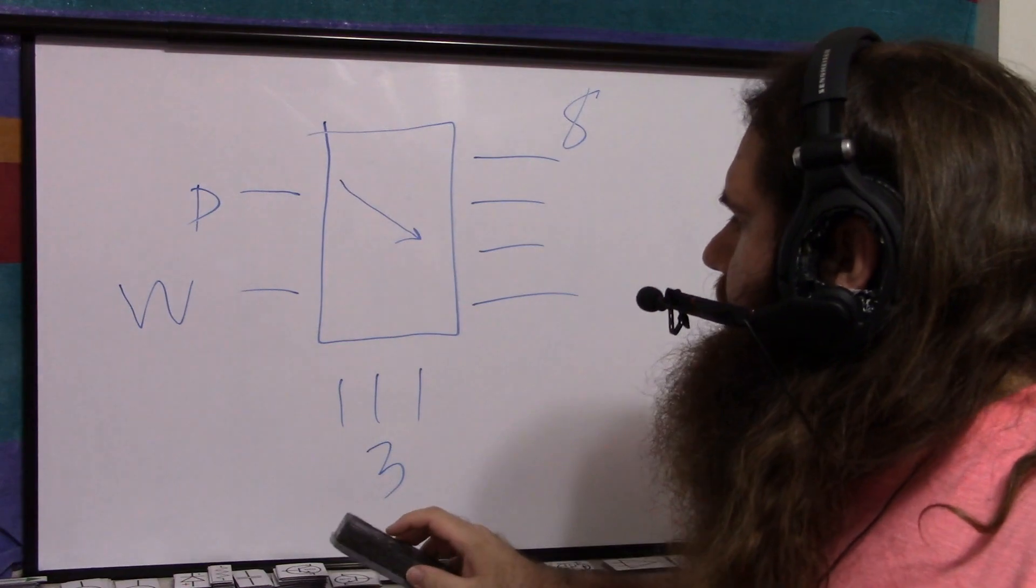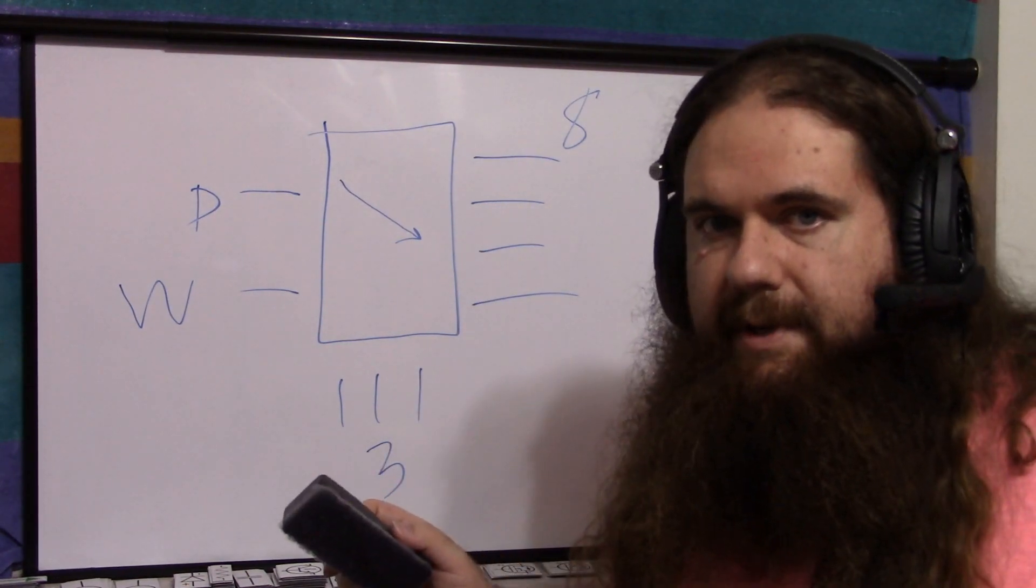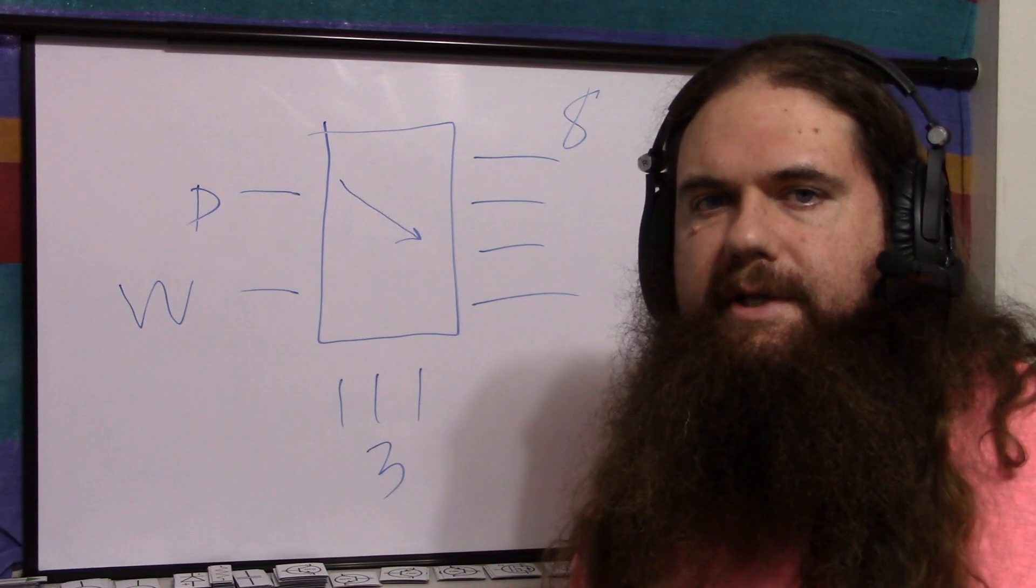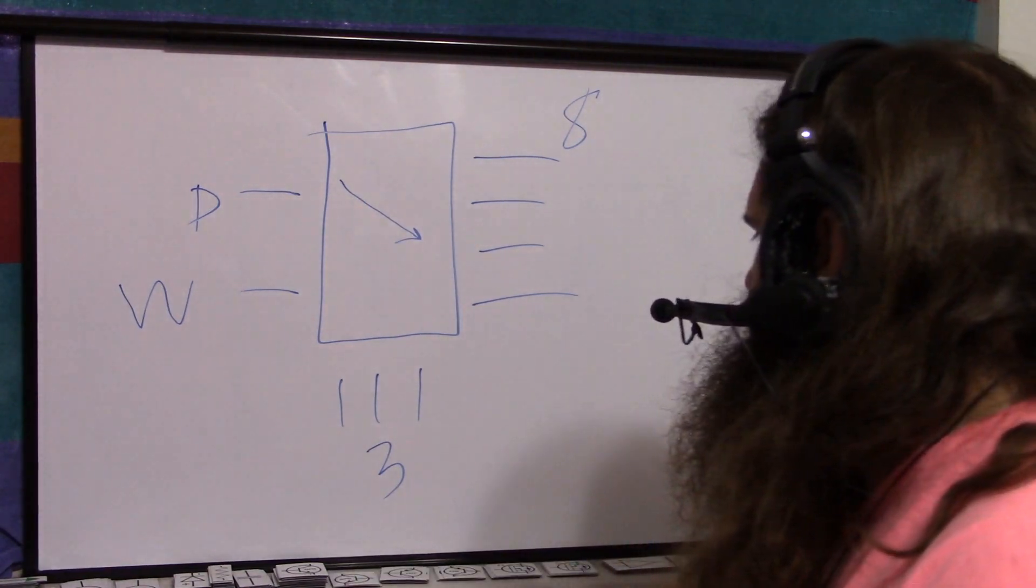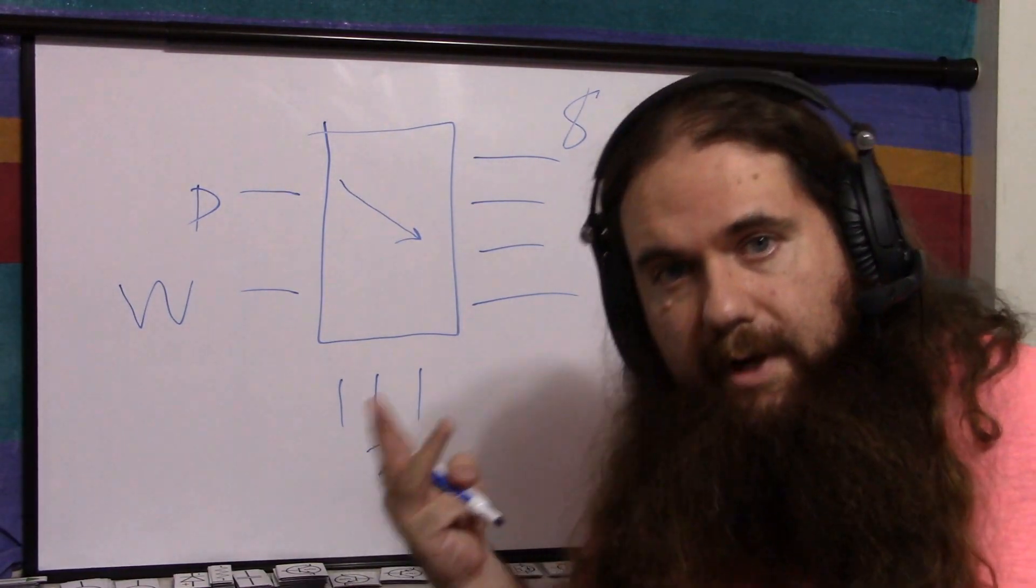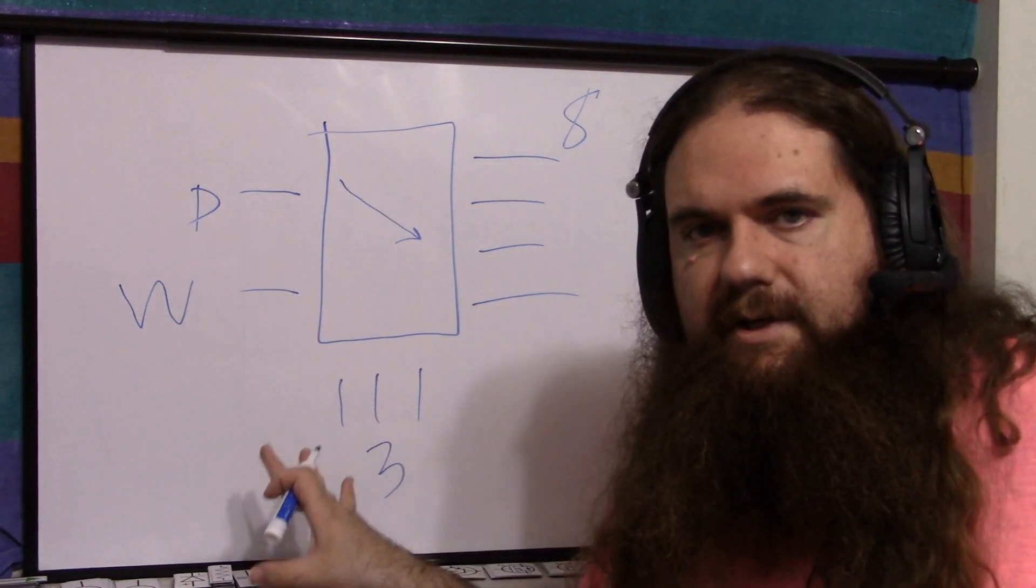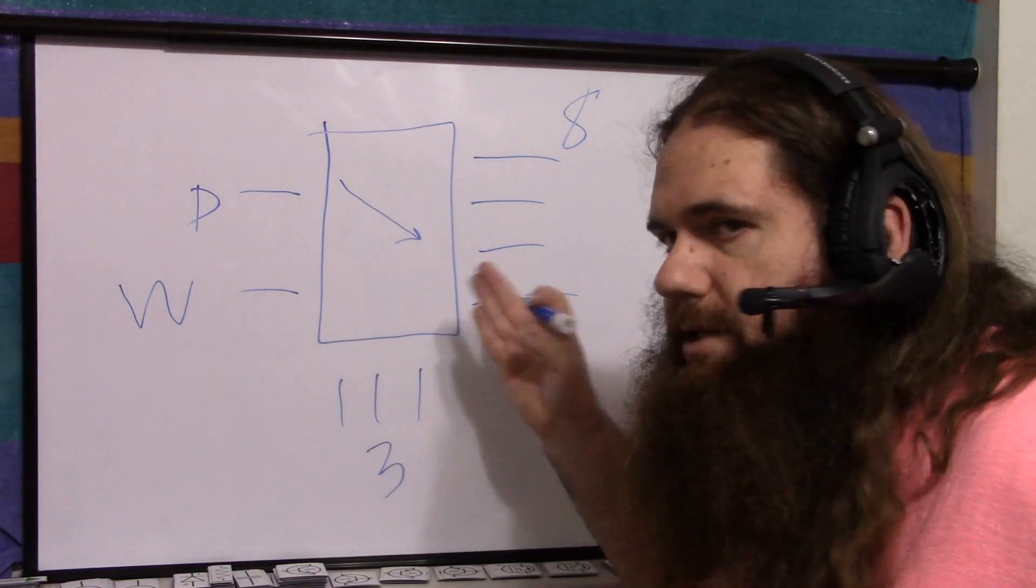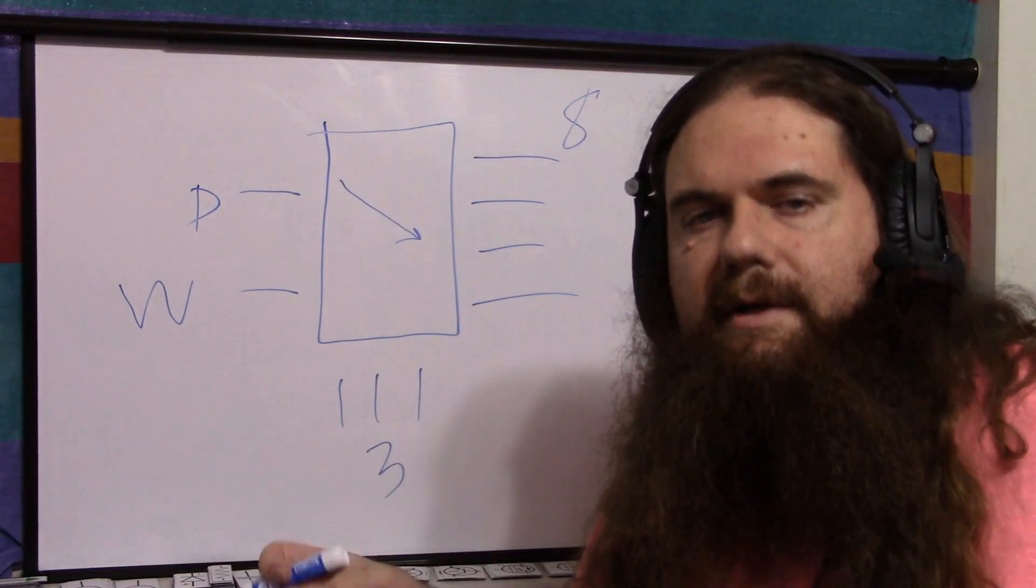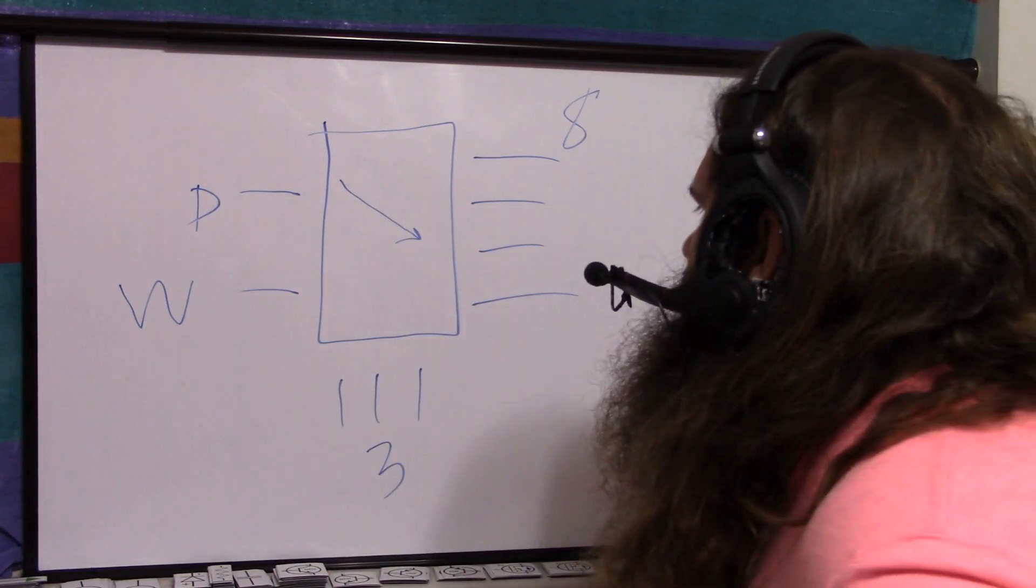But you can see right now, we're getting eight pins output, but we're spending five pins to do it. So we're only gaining three pins. That's cool, but it's the least efficient startup. Now, if you chain the chips, if you add more than one, then every subsequent chip is a big gain.